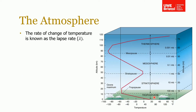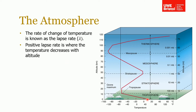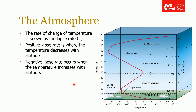How does temperature change with altitude? This plot shows temperature along the bottom axis and altitude on the y-axis going up from ground level. In the troposphere, starting from around 15 degrees at ground level, the temperature decreases at a constant rate as altitude increases. This rate of change of temperature is known as the lapse rate, and we use the symbol lambda (λ). If temperature decreases with altitude we have a positive lapse rate, as seen in the troposphere. If we have a negative lapse rate, the temperature increases with altitude, as seen in the stratosphere.